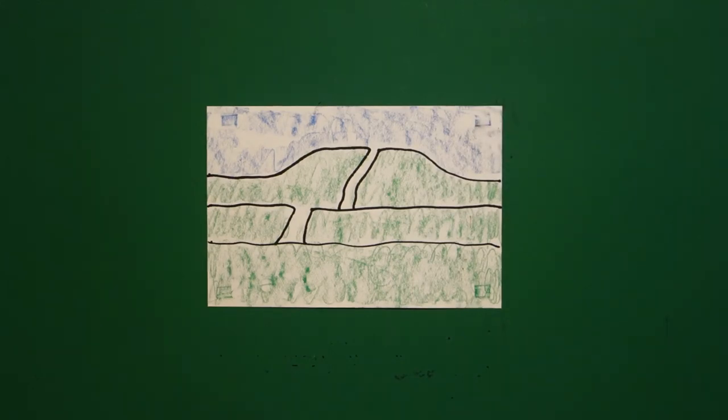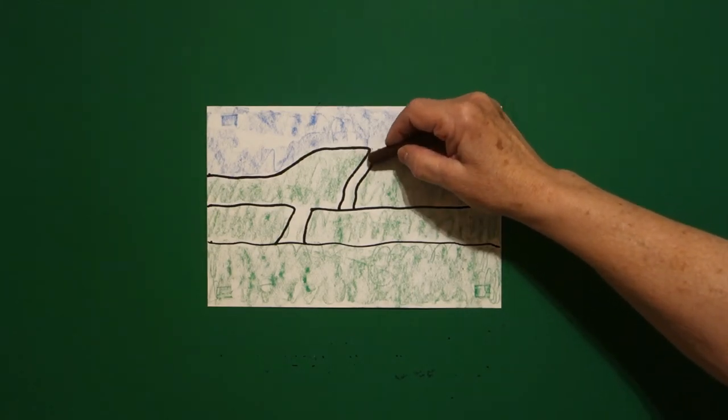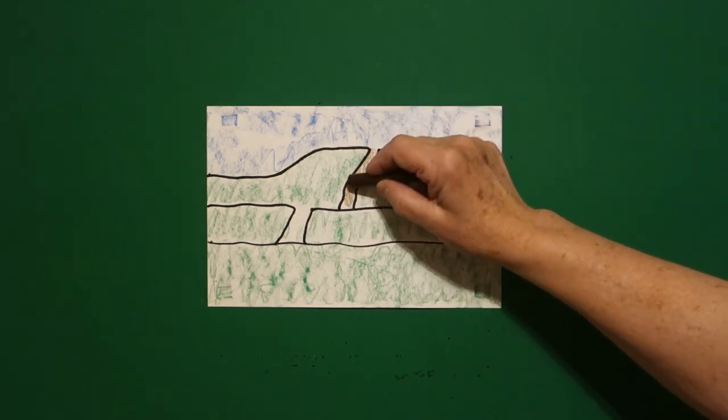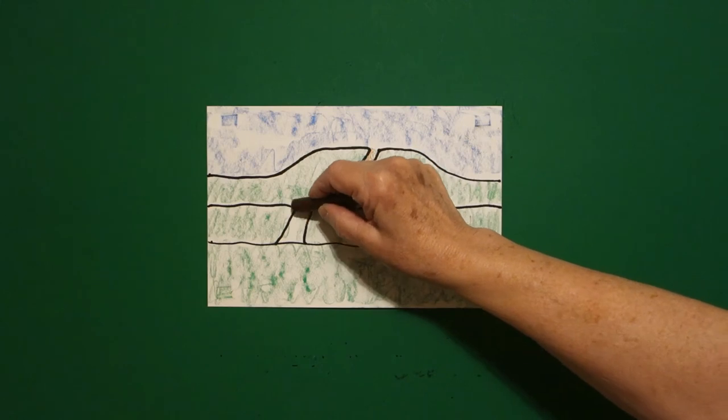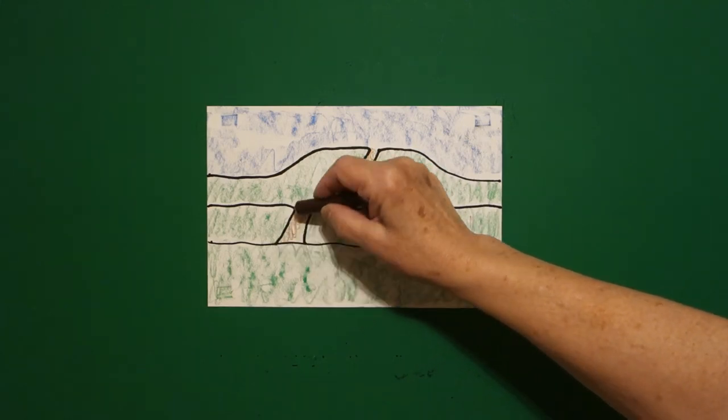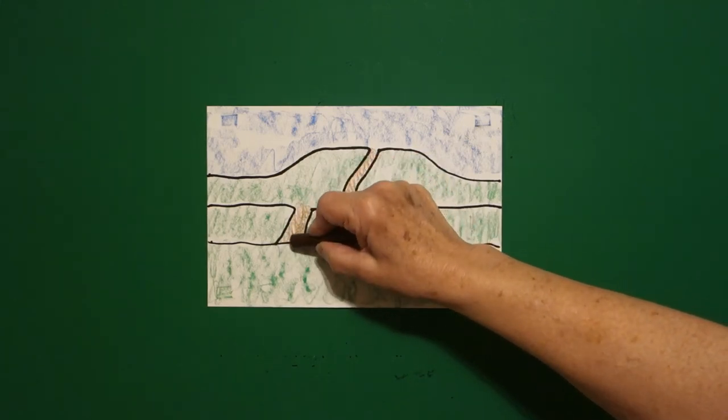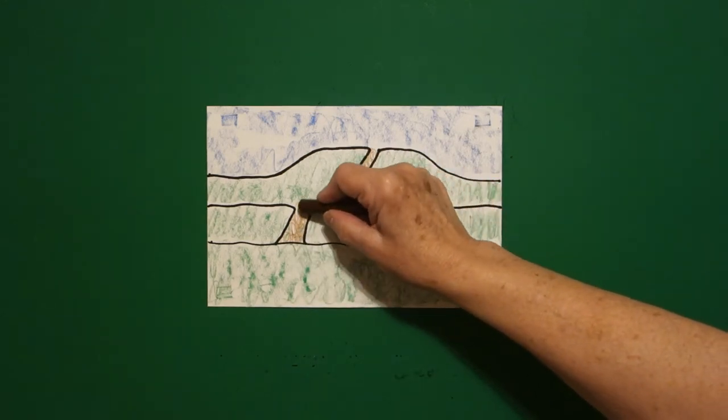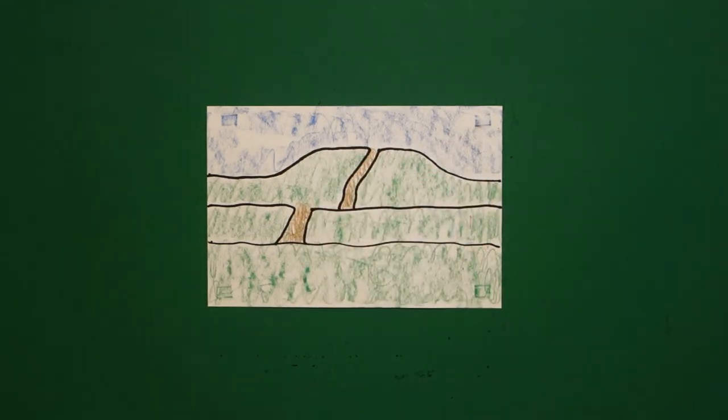And then the last thing we're going to do is take a brown and just loop-de-loop our walkways. And again, almost all of this, if you looked at it, disappeared into the landscape. That's all. So, let's see what this looks like all colored in.